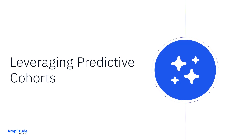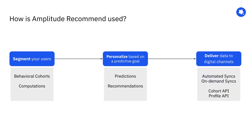This video will cover the basics of predictions and building predictive cohorts. Now that we've gone through a basic workflow of segmenting and syncing audiences, let's briefly take a look at how Amplitude uses machine learning to help you create new audiences for personalization.